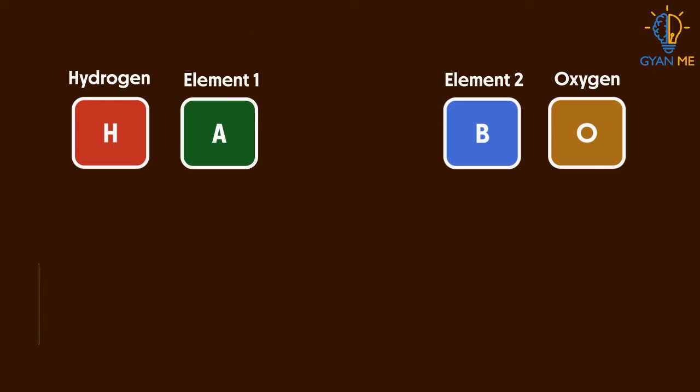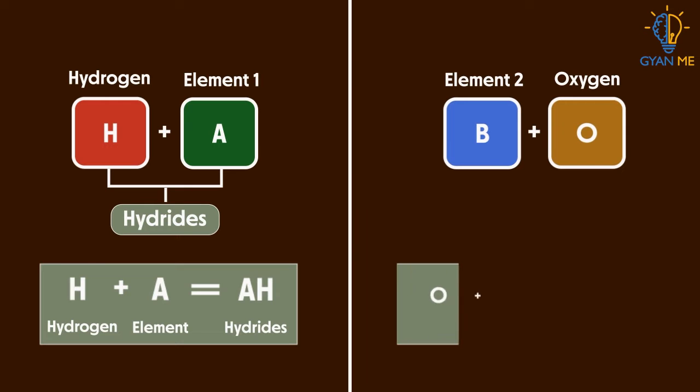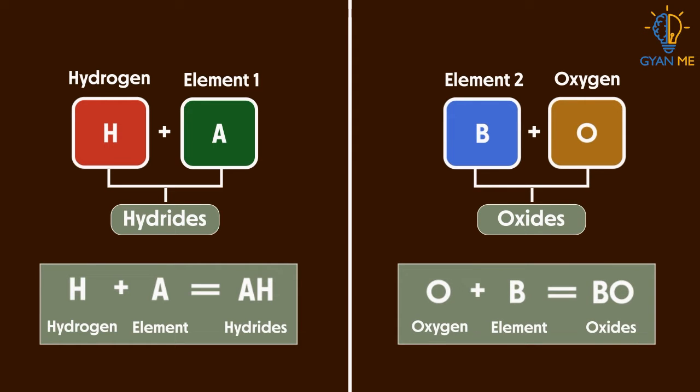When hydrogen reacts with elements, they form respective hydrides. While on the reaction of elements with oxygen, oxides are formed.